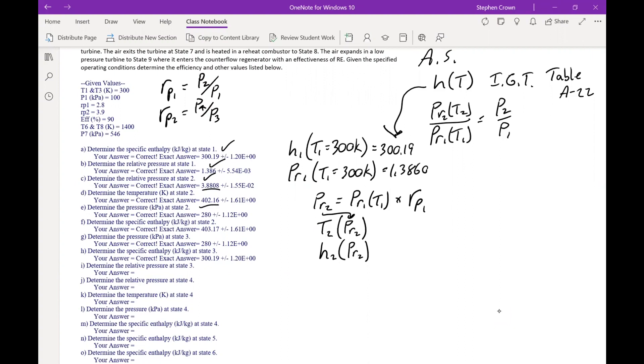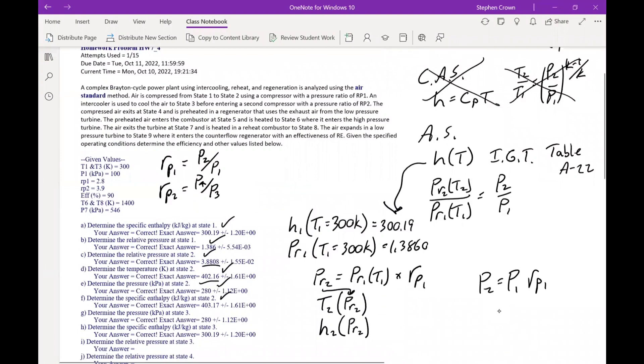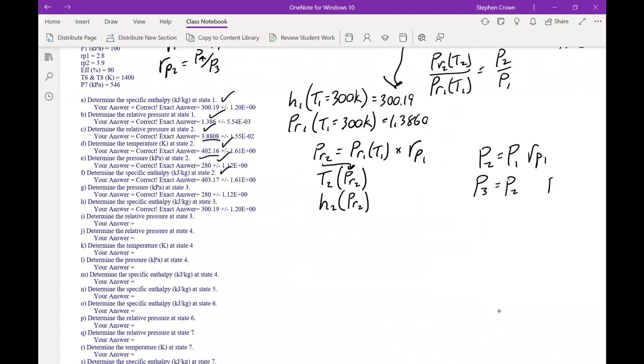And then enthalpy for state 2, and then pressure at state 2 is simply just P1 times RP1, just like we did in the previous problem. We found T2, we found enthalpy at state 2. And finally, pressure at state 3 equals pressure at state 2. It's an isobaric process. So P equals constant for process 2, 3. So pressure stays the same.